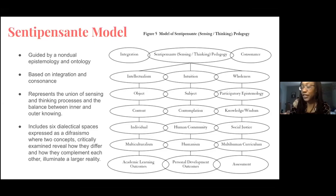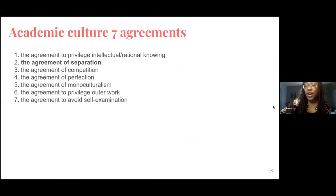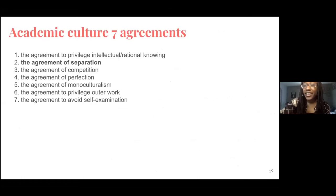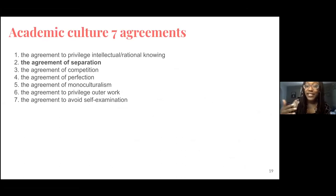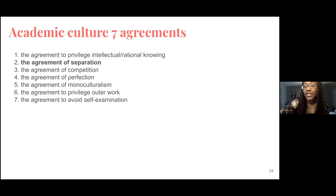We have to consider what are the things we already know. We have to acknowledge that we've already been indoctrinated and assimilated into a way of being — and that is the classroom. We as a culture and learned society walk with agreements. Rendon points out these agreements as those that privilege intellectual or rational knowing, separation, competition, perfection, monoculturalism, privilege outer work, and avoids self-examination.